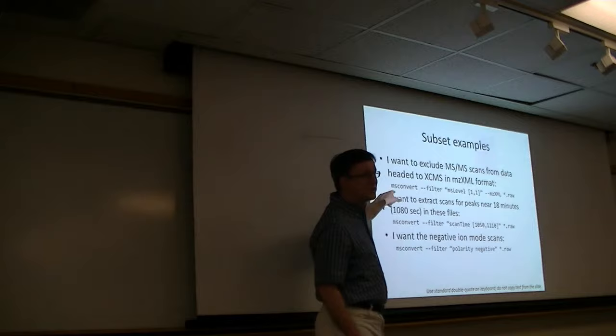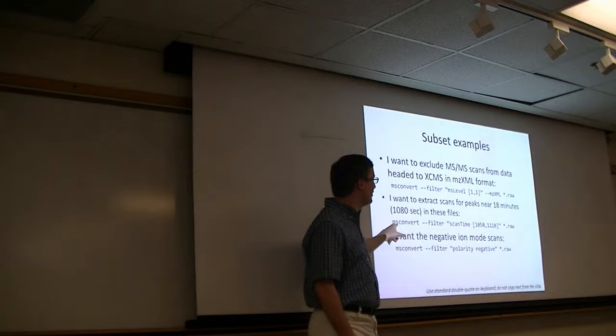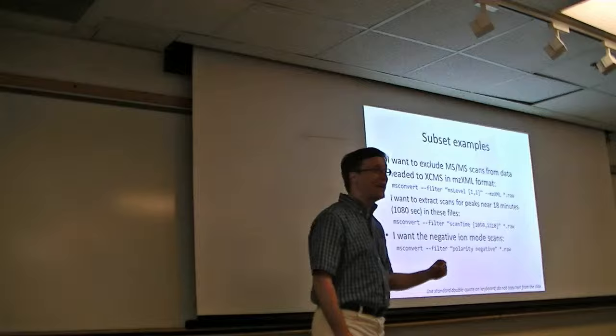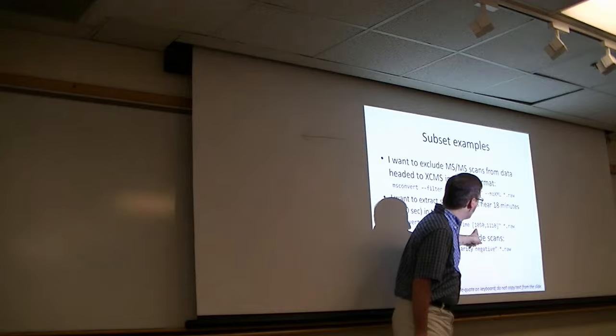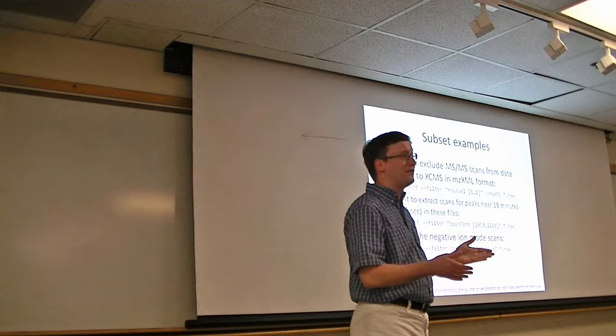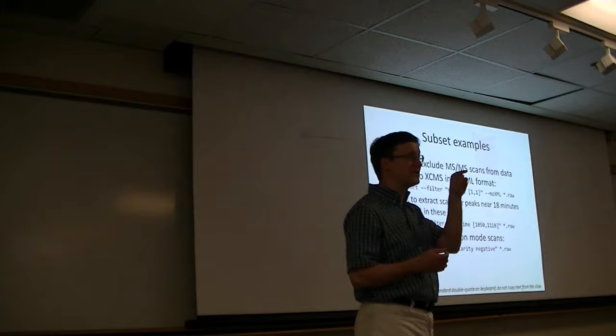Next, I want to extract scans for all those peaks that are near 18 minutes, which is about 1080 seconds in this set of files. So, we have some peak that's showing up around 18 minutes. We want to know what it is. So, this is how we go after those. We can run our MS convert with our scan time filter. Here, saying that anywhere between 1050 and 1110 seconds is okay. And, we're going to just process those raw files. So, this is going to kick out MZML files, one for each raw, that contain just that narrow range of scan times. Alright. If you want just the negative ion mode scans, the user interface is pretty straightforward on that. Just MS convert filter polarity negative raw. So, out pops an MZML file that contains just those polarities.